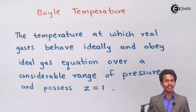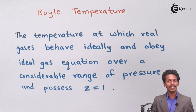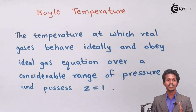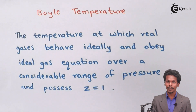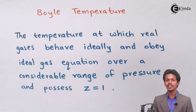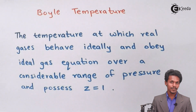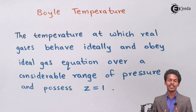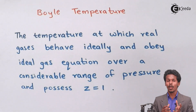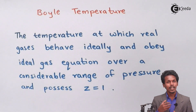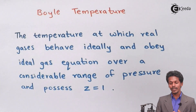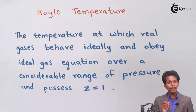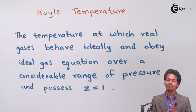We have discussed earlier the compressibility of gas — that basically a gas which obeys Z equals to 1 means the compressibility factor for that gas is 1, which means it is behaving like an ideal gas. We also know that if the value of Z is less than 1, it means the gas is liquefiable or compressible. So now we are going to talk about Boyle temperature, which clearly indicates the temperature at which the real gas behaves ideally.